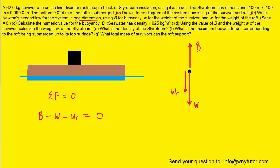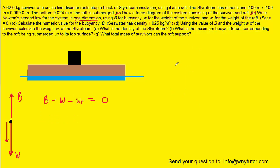And in part C, we're asked to calculate the numeric value for the buoyancy force. And in order to do that, we should write out the equation for the buoyant force. And that equation tells us that the buoyant force is equal to the density of the fluid, which in this case is water, multiplied by g, multiplied by the volume of the submerged portion of our object.